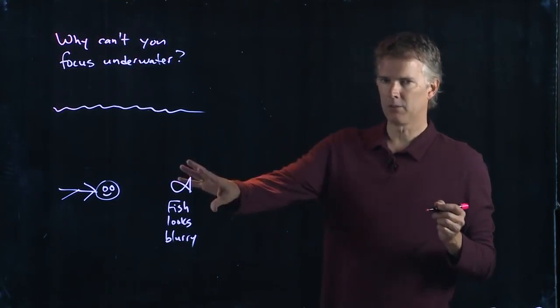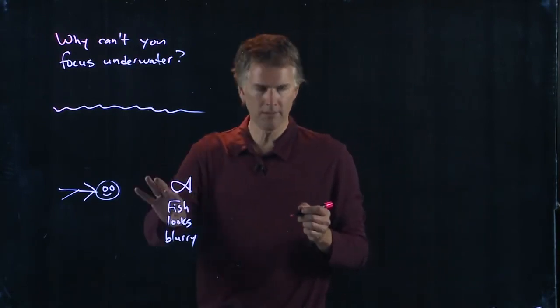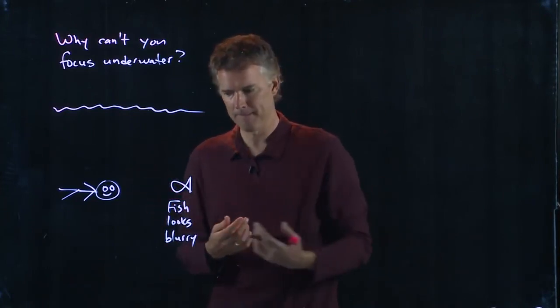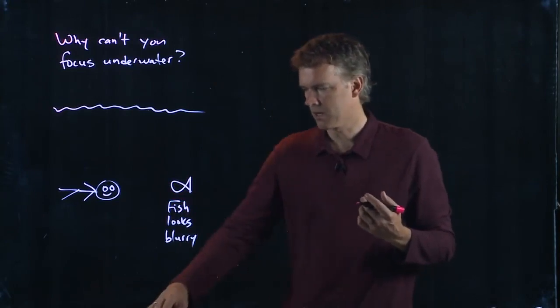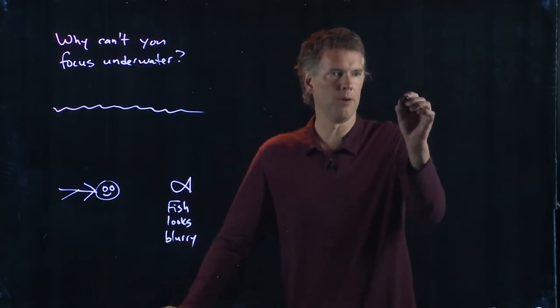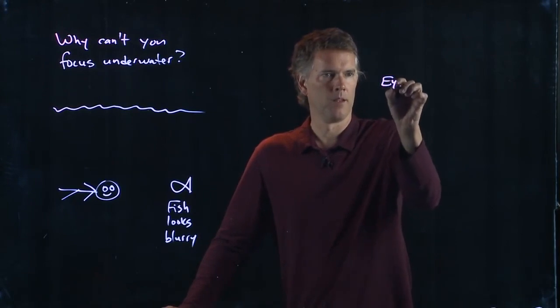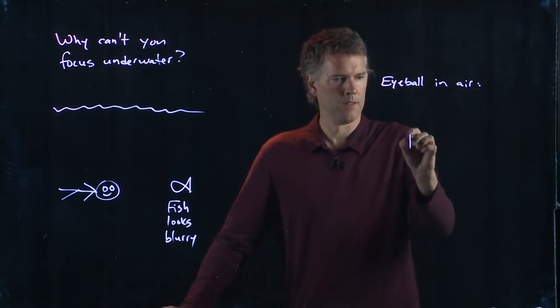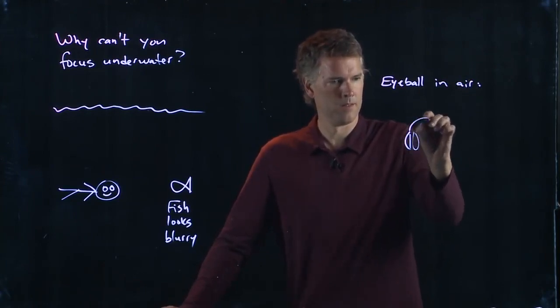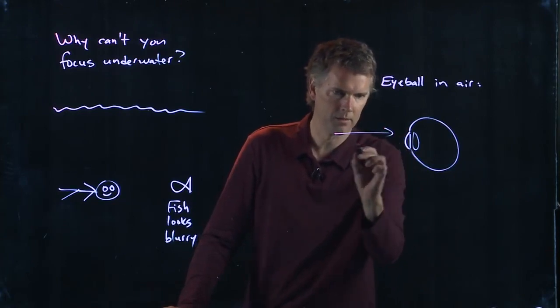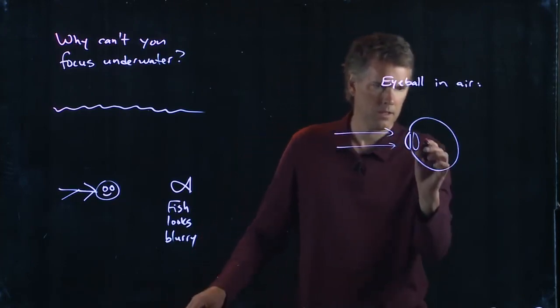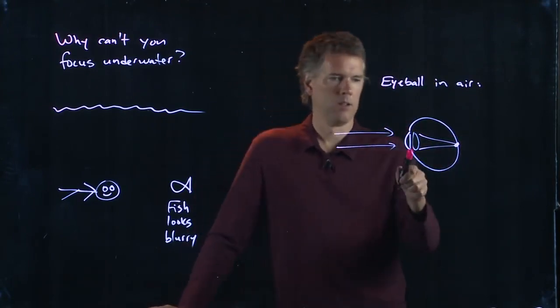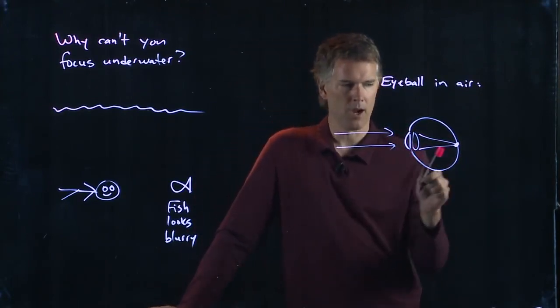To understand this, we need to think about what's happening to the rays of light that are coming from the fish to our eyeballs. Let's draw a couple of pictures here. Here's your eyeball. When parallel rays come in, they are focused to a point at the back of the retina, at the back of your eyeball at the retina.